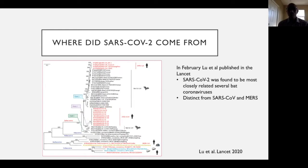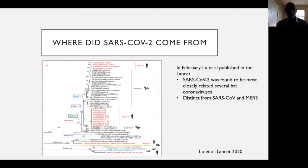Back in February — very early on — a paper came out in the Lancet, also released earlier on preprint servers. They took sequences of several SARS-CoV-2 viruses sampled from individuals in Wuhan and compared them to known sequences from other coronaviruses, including SARS and MERS. When they put the tree together, they found the new coronavirus formed its own clade — very unique and distinct from many other coronaviruses, particularly from the original SARS and MERS.